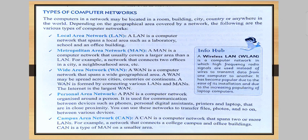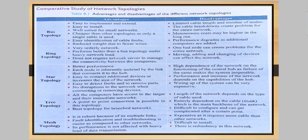Next is Personal Area Network, or PAN. A PAN is the computer network organized around a person. It is used for communication between devices such as phones, personal digital assistants, printers, and laptops that are in close proximity. You can use these networks to transfer files, photos, and so on between various devices. Next is Campus Area Network, or CAN — a computer network that spans two or more LANs, for example connecting a college campus or office buildings. CAN is a type of MAN over a small area.